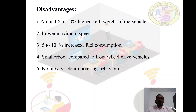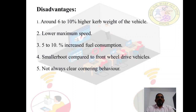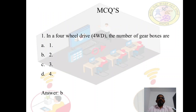The disadvantages: around six to ten percent increase in the curb weight of the vehicle; it lowers the maximum speed; five to ten percent increase in fuel consumption; a smaller boot compared to front-wheel drive vehicles because more space is required to accommodate the additional components; and not always clear cornering behavior — while taking a turn there will be cornering behavior of the vehicle that is not always predictable. These are the disadvantages of the four-wheel drive system.